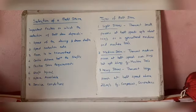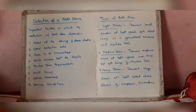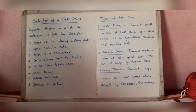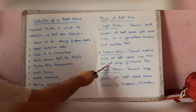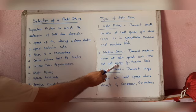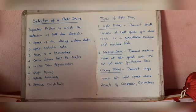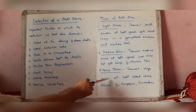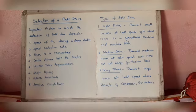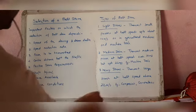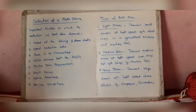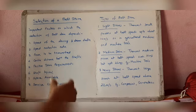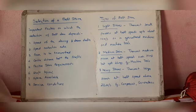Next is medium drive, which transmits medium power at belt speeds over 10 meters per second but up to 22 meters per second, used for machine tools. Then heavy drive, which transmits large power at belt speeds above 22 meters per second, used in compressors and generators — for example, air compression and electricity generation.